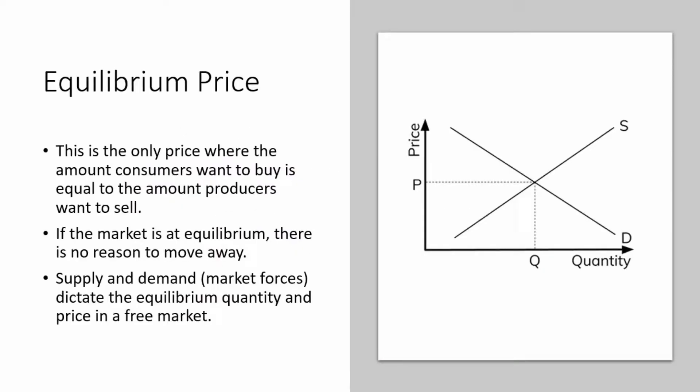Equilibrium price. This is the only price where the amount consumers want to buy is equal to the amount producers want to sell. If the market is at equilibrium, there is no reason to move away. Supply and demand, market forces, dictate the equilibrium quantity and price in a free market.